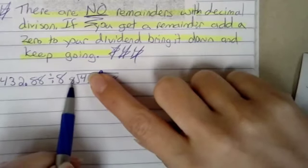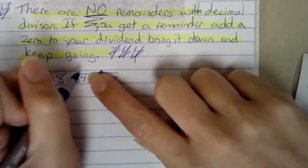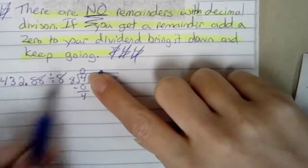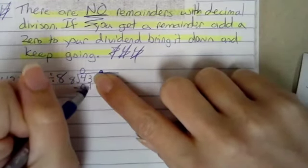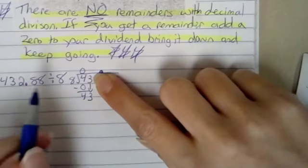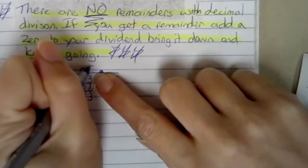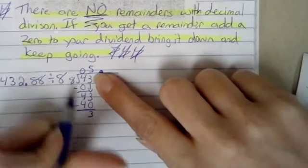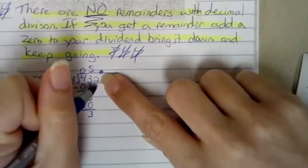Pretend they're whole numbers. 8 goes into 4, can't happen, 0 times, that's 0, we subtract, we get 4. That is less. We bring down our next digit of 3, 8 goes into 43, 5 times, 5 times 8 is 40, we subtract, we get 3. That is less, we bring down our 2.